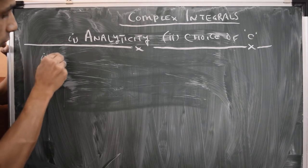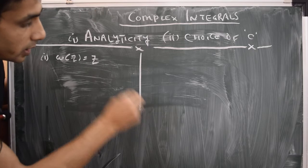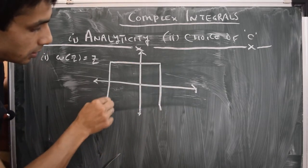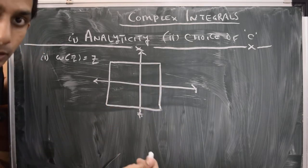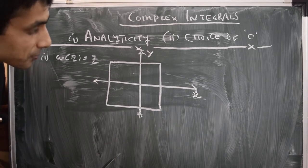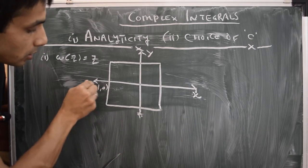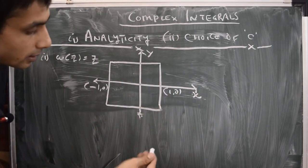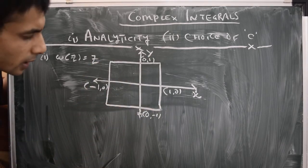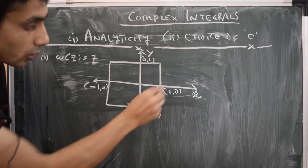As the first example, let's consider the function W(z) = z and evaluate its integral over a simple square loop in the complex plane. This is a square centered at the origin, with the real axis labeled x and the imaginary axis labeled y. The square runs from x = -1 to x = 1 and y = -1 to y = +1, and we'll move along it in the counterclockwise direction.